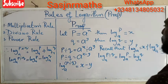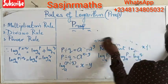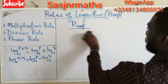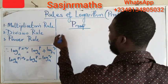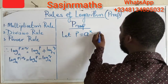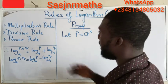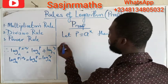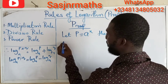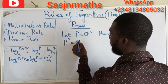We have now gotten the second rule, which is the division rule. We will now move to the third, which is the power rule. For the power rule, we again start by defining: let p equals a raised to the power x, then log base a of p equals x. Since we are dealing with the power rule, I will take the same power on both sides — let both sides be raised to power n — giving p raised to power n equals a raised to power x, all raised to power n.